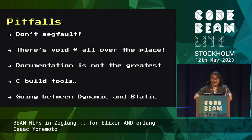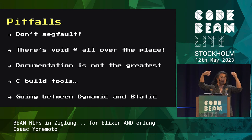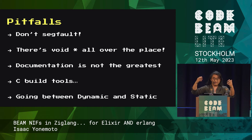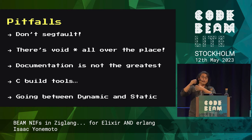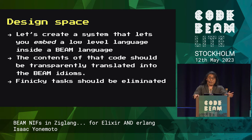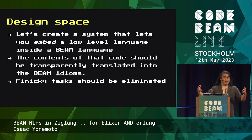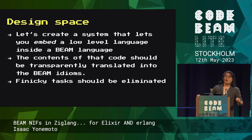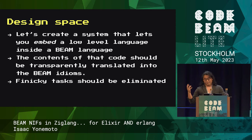Ultimately, the reason we have to have this NIF interface is because we're moving from the dynamic typing land of the Beam, where a term can have multiple different types, and we need to somehow make that fit with the static typing of low-level languages like C, Rust, or as we'll see, Zig. When I was working on this I thought, maybe we need to have a better way of doing this — some sort of framework.